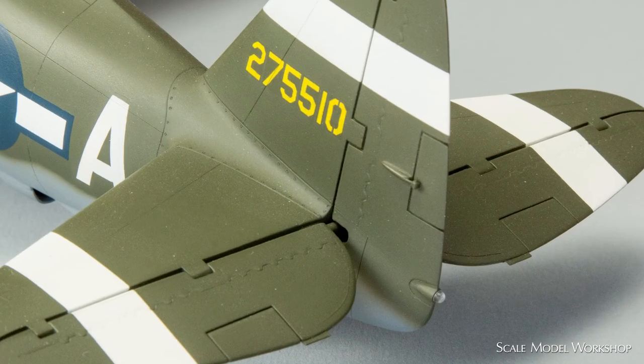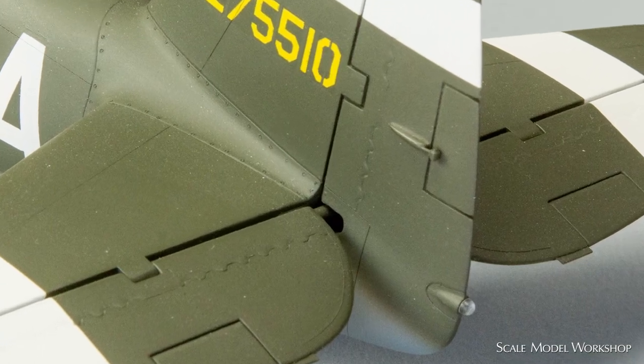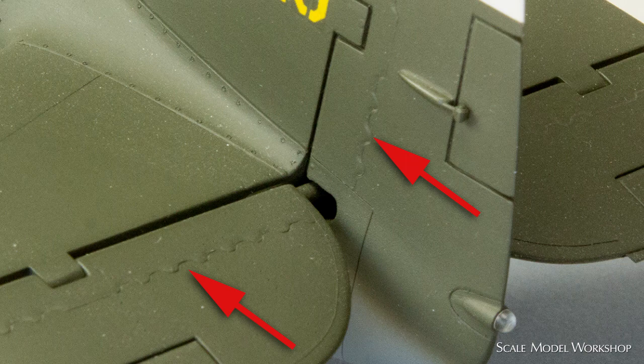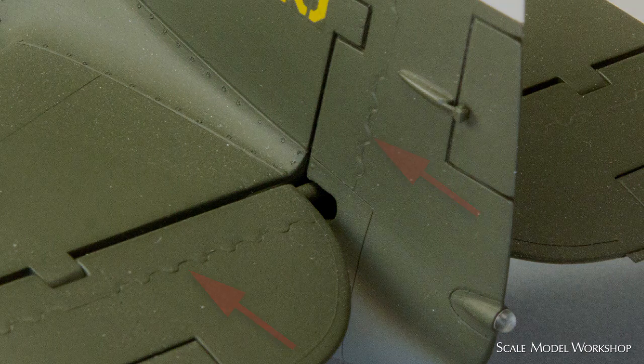The second method employs an opposite approach by reducing material from the adjacent panel. Using this method, along with custom stencils or guides, opens up a number of possibilities. The overlapping panel detail on the rudder and elevators of this old 32nd scale Revell P-47 was done with this technique.